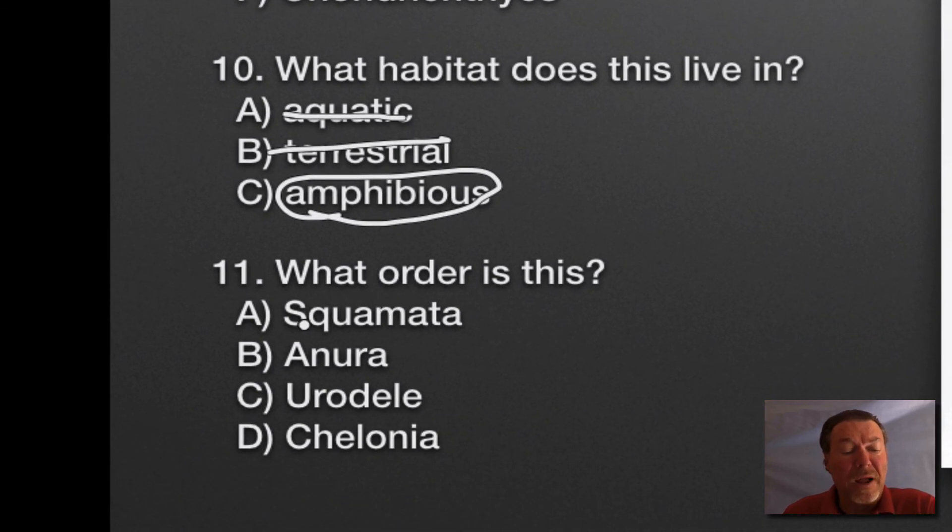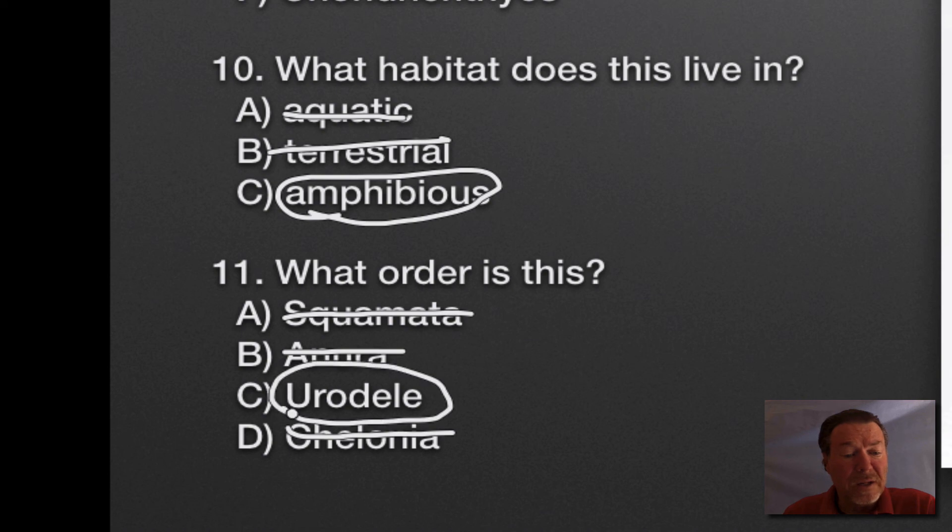What order is this? We can rule out Squamata, that's lizards and snakes. We can rule out Anura, that's frogs and toads, although it is in class Amphibia. We can rule out Chelonia, that's the turtles. So the answer is Eudela, and I'm probably pronouncing that wrong, and that's okay. Remember, you don't have to pronounce it or spell it on the test. You just need to know what the answer is. So it's Eudela for the salamander.